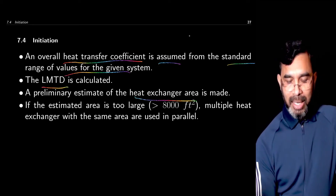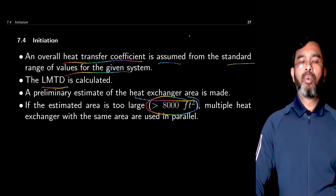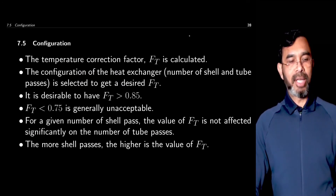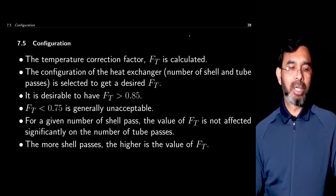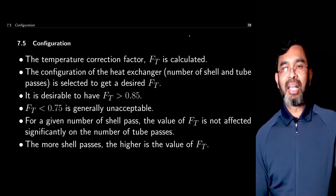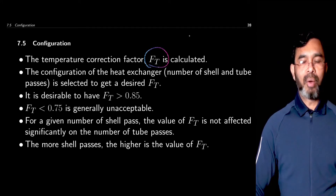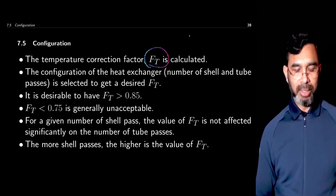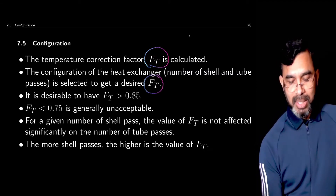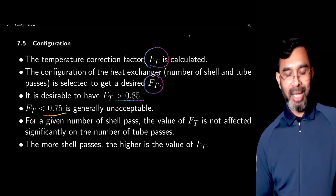If the area is too large — typically larger than around 8,000 square feet — then one heat exchanger is not enough and you need to use multiple units. For multi-pass shell and tube heat exchangers, the shell side can have more than one pass and the tube side can also have more than one pass. For those cases, the log mean temperature difference needs a correction factor FT. A desirable value is greater than 0.85, and if it is less than 0.75, it is typically considered unacceptable.